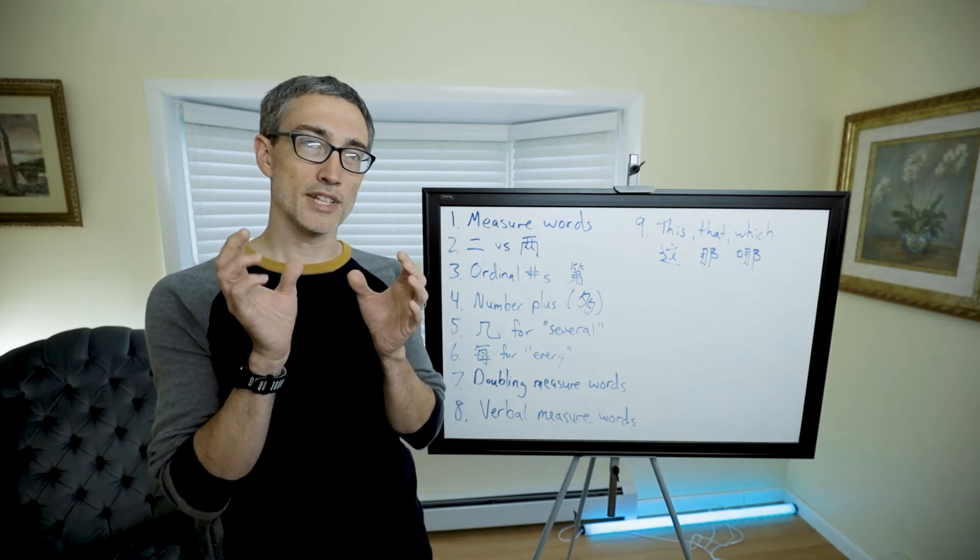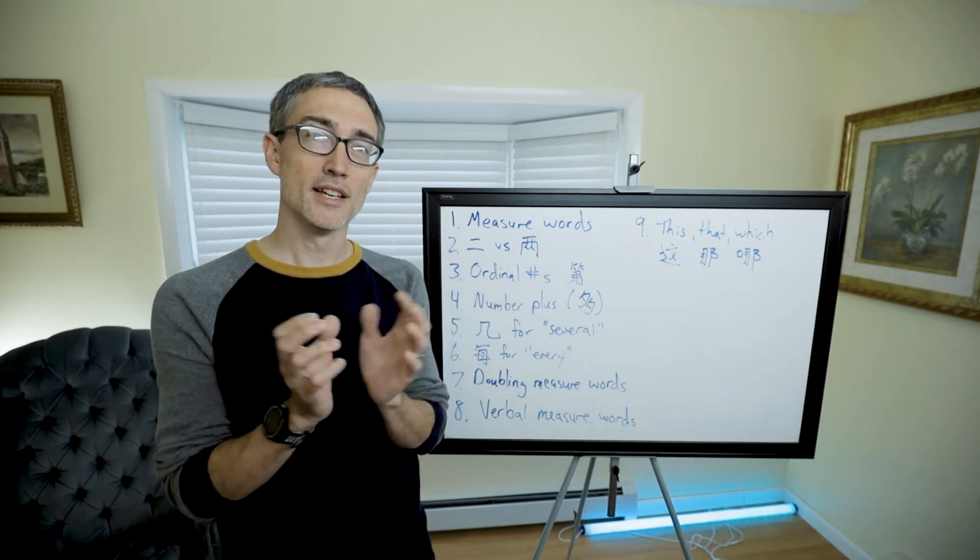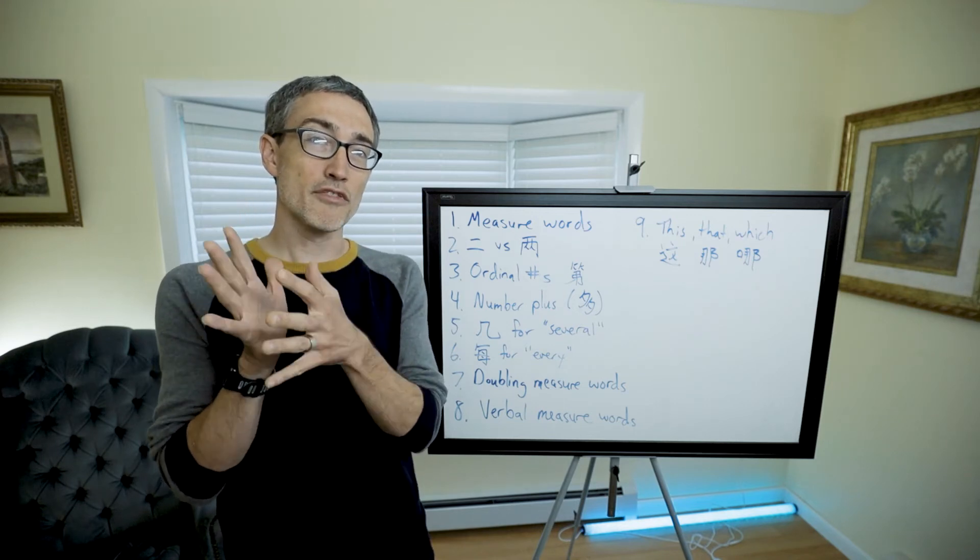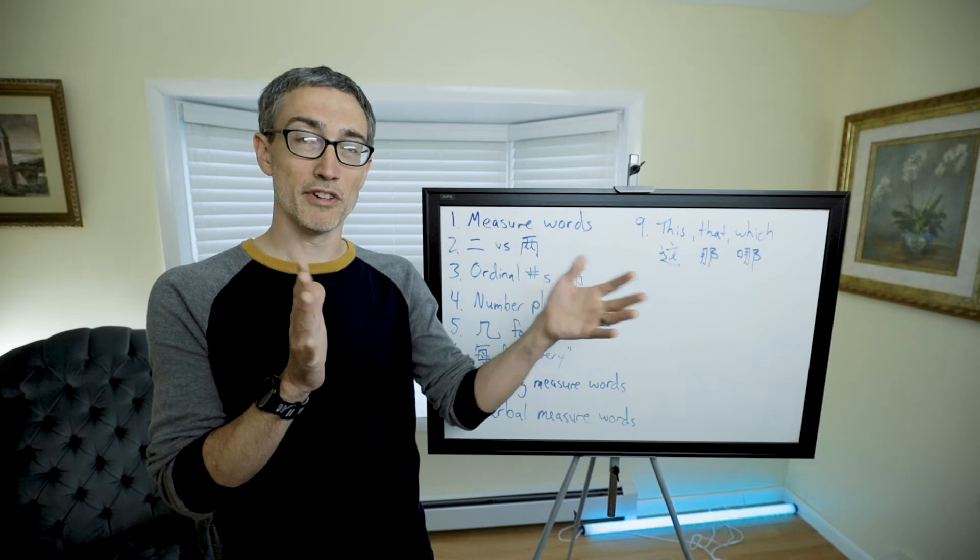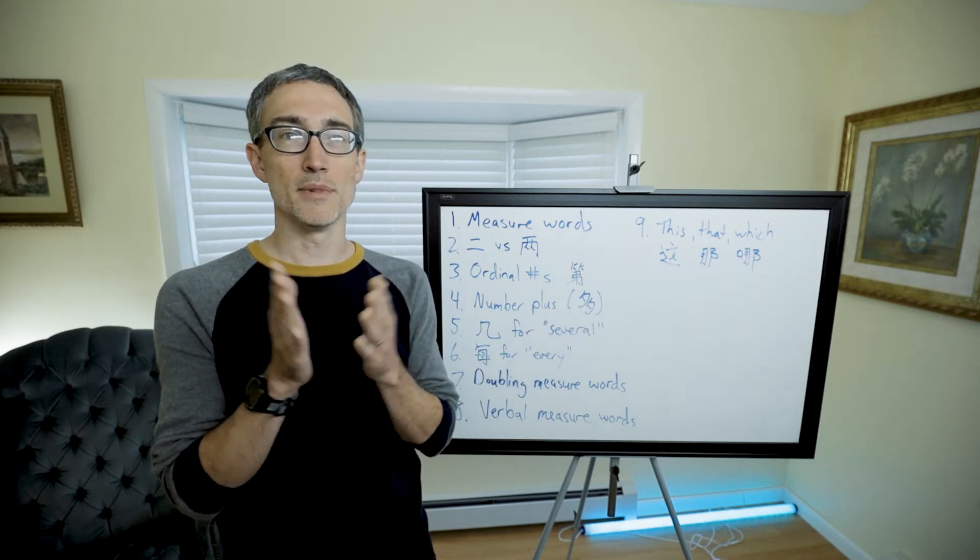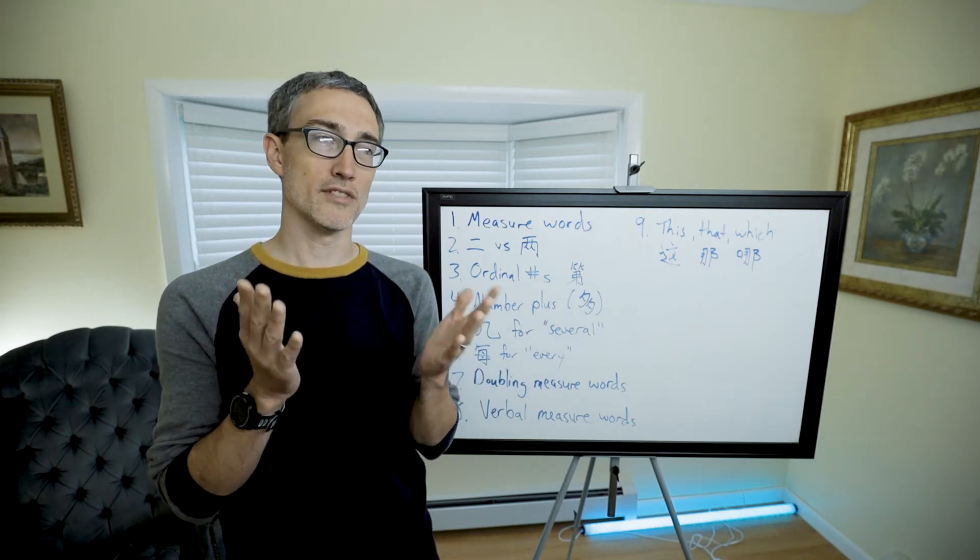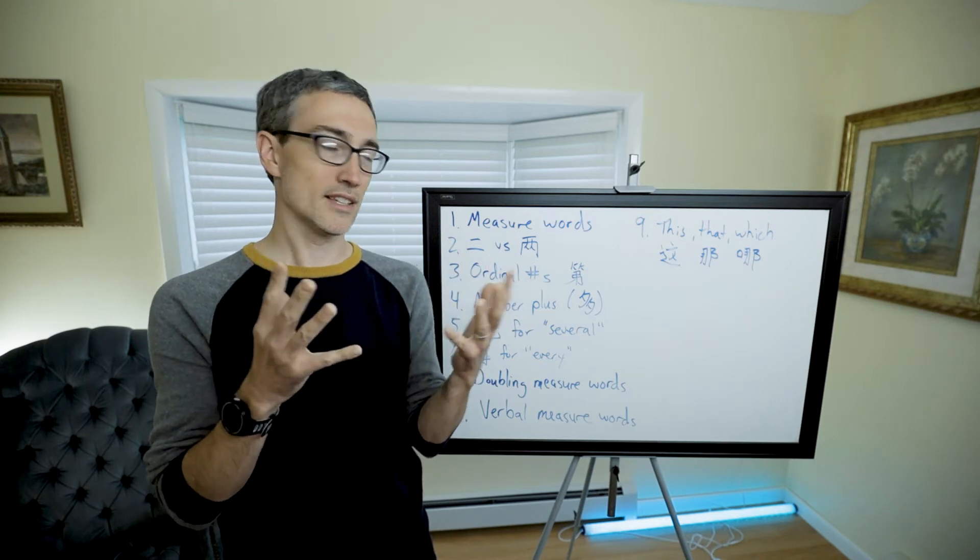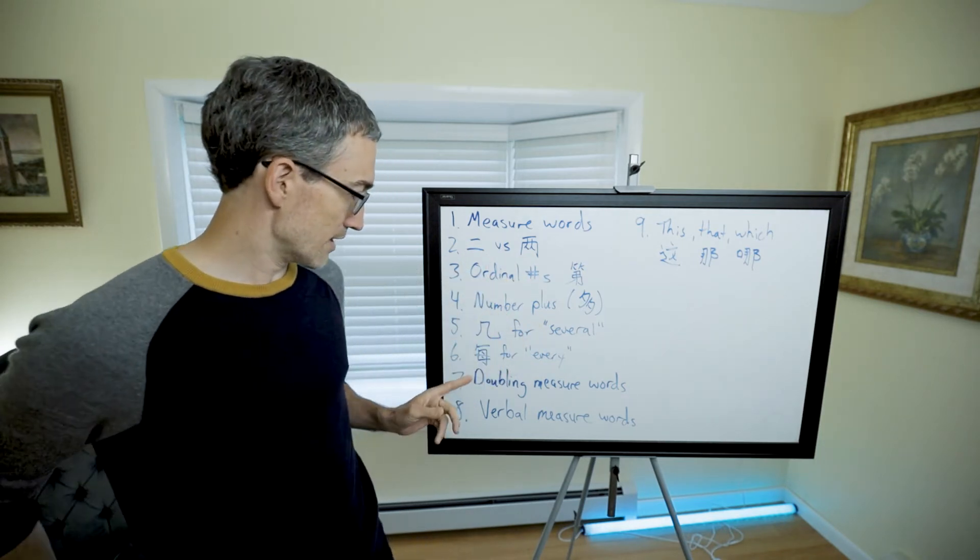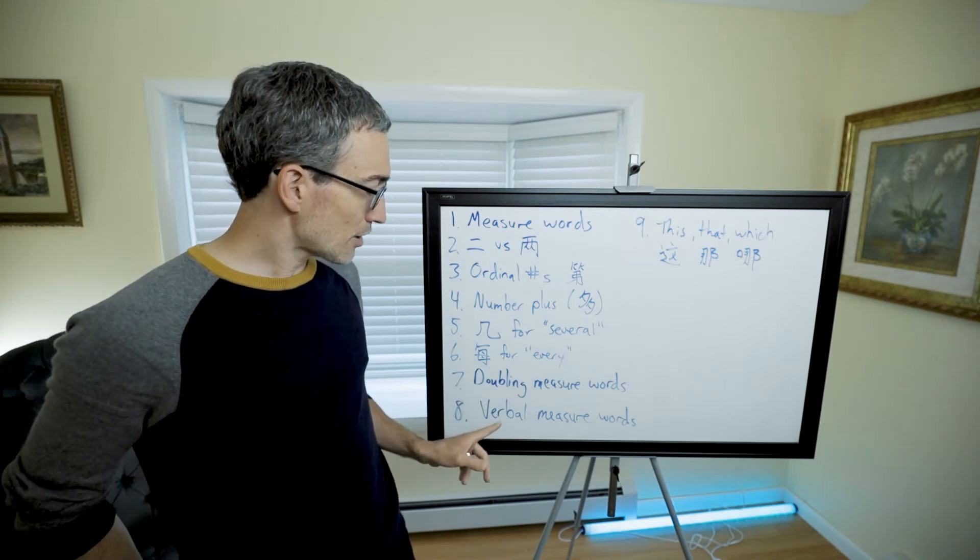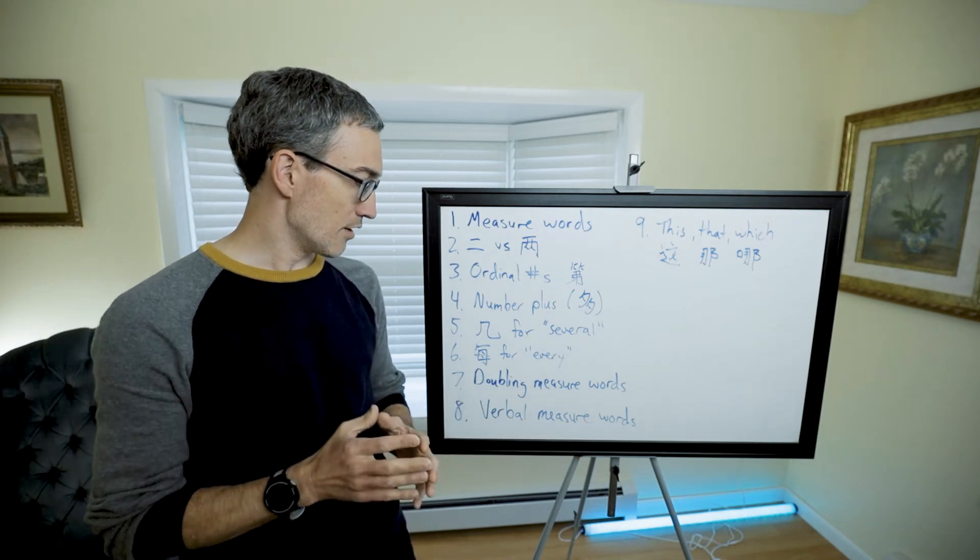If we take a measure word like 个 (gè) or 天 (tiān) and double it, it means every one of those things or those nouns that it would be referring to. So 个个 (gè gè) means every person. 天天 (tiān tiān) is every day. That is a measure word that indicates day. 本本 (běn běn) is every book because that's the measure word for book.